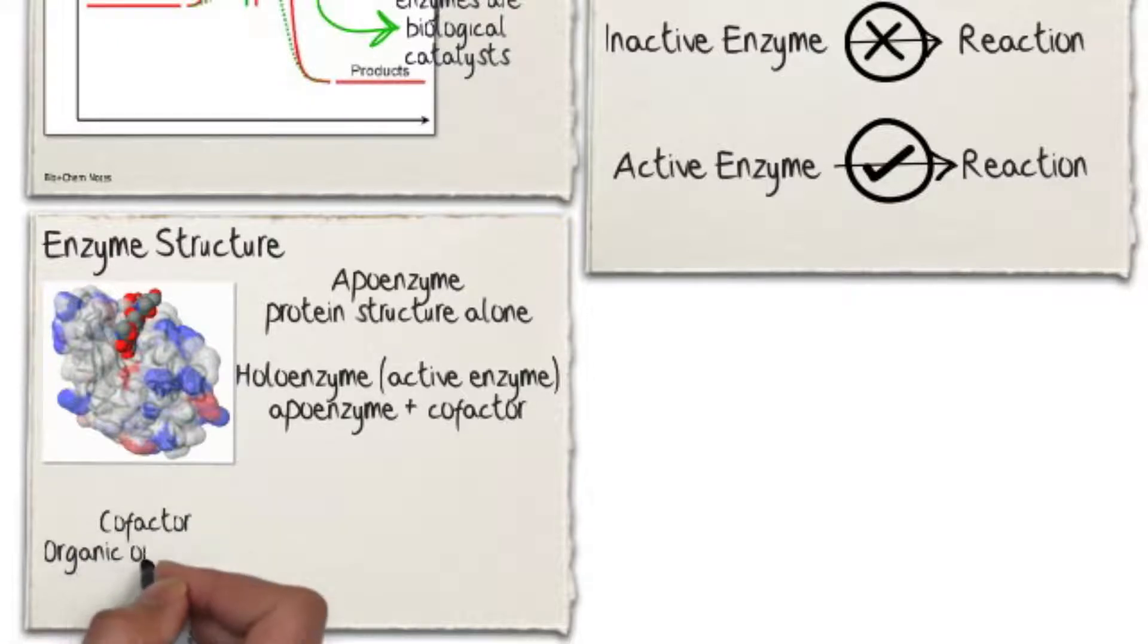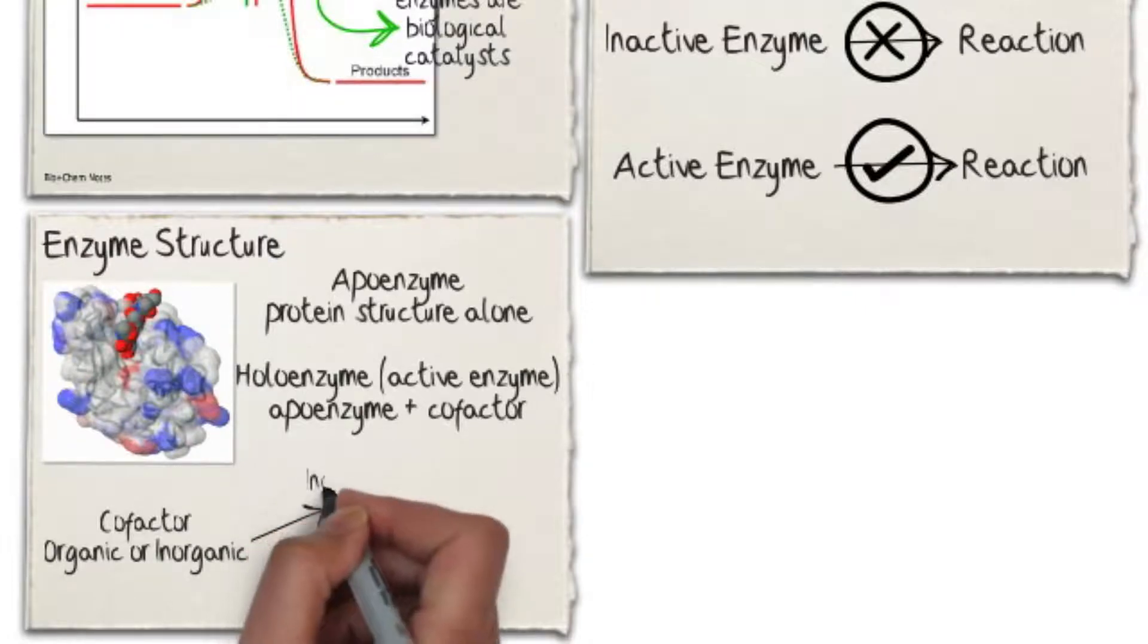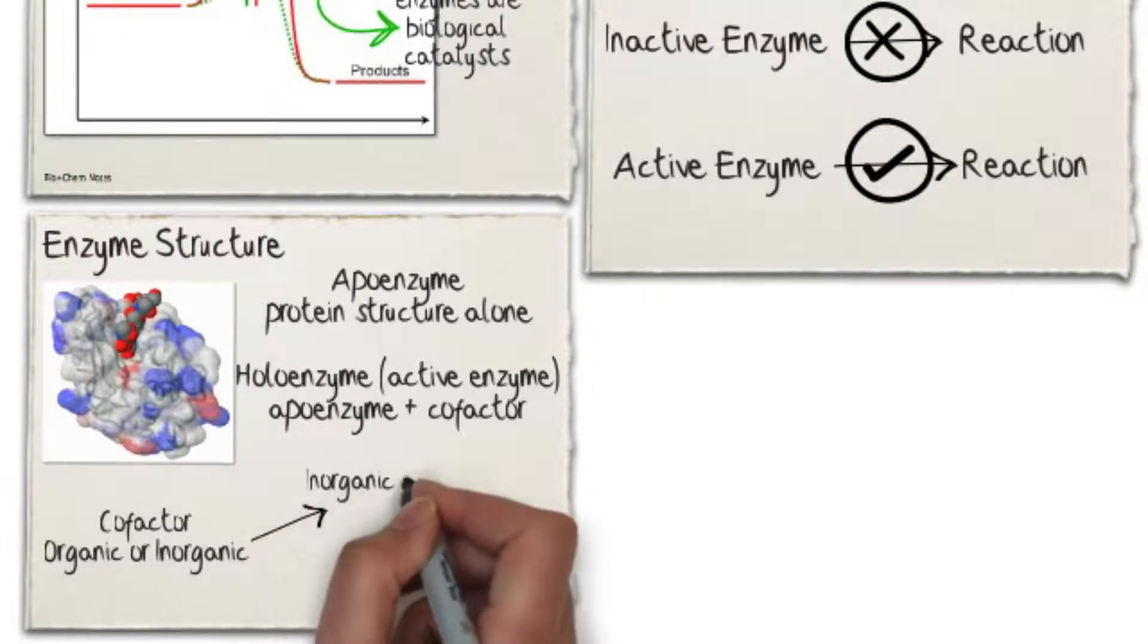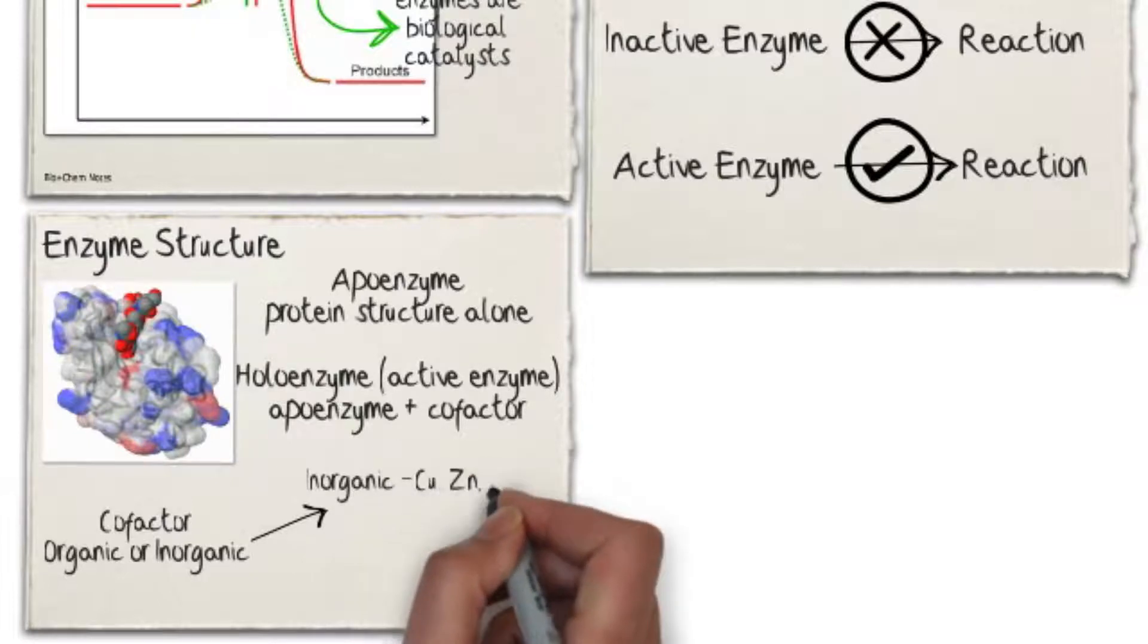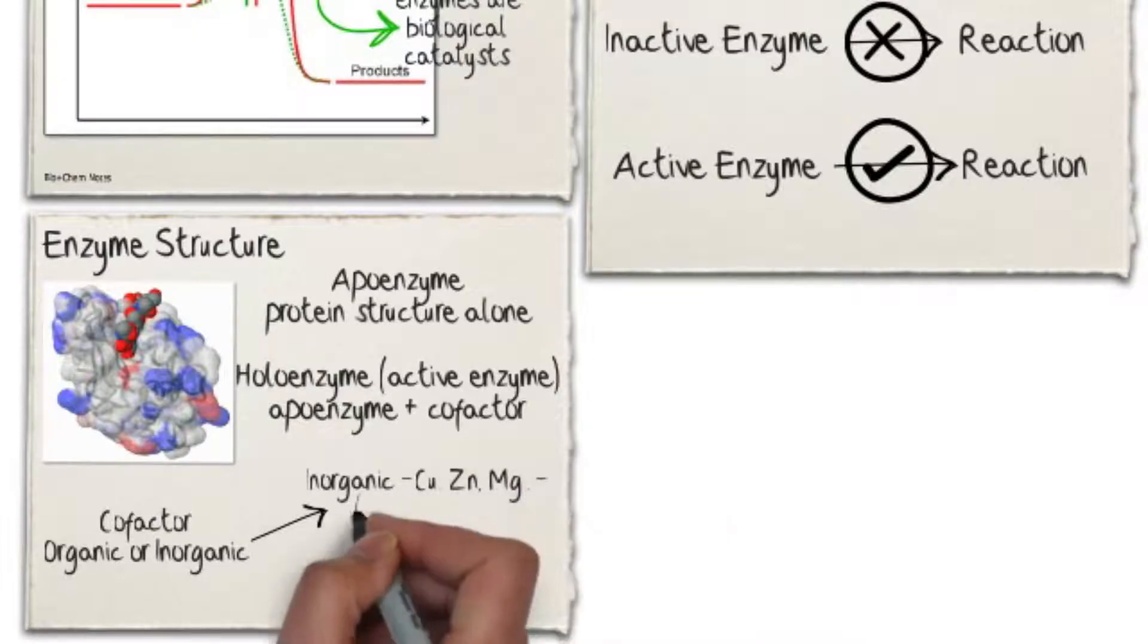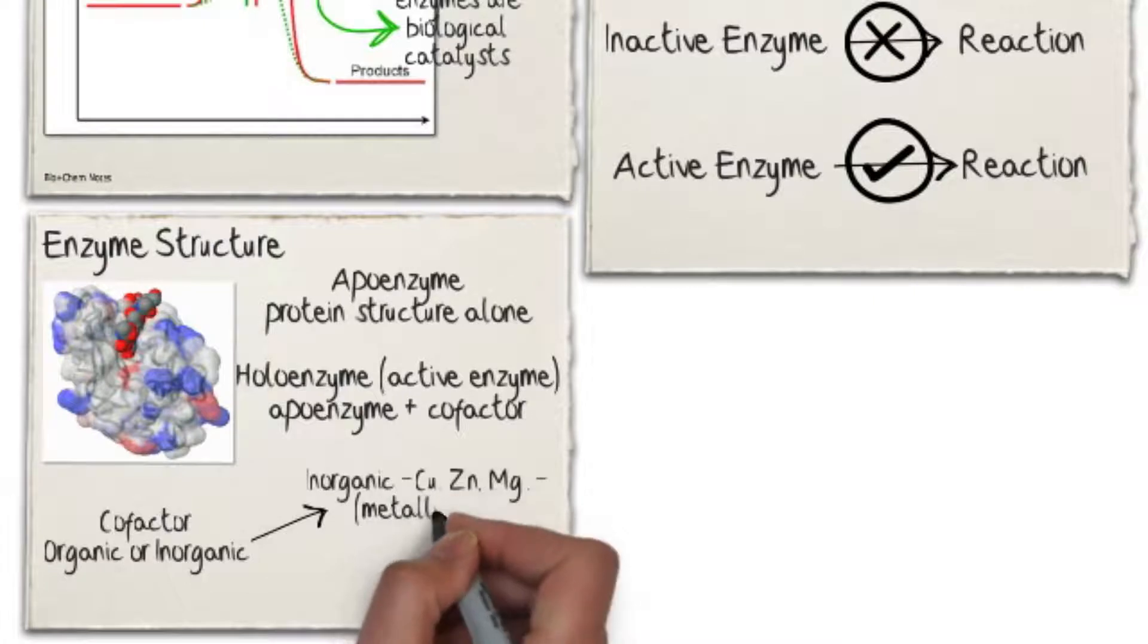Cofactors can be either organic or inorganic. Inorganic cofactors are also known as metallic ions. You may be familiar with some of them already. Metallic ions such as copper, zinc, or magnesium are examples of inorganic cofactors.